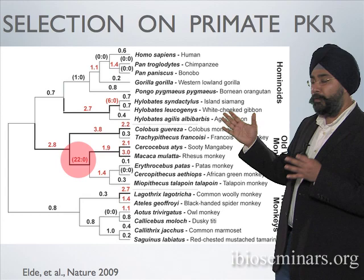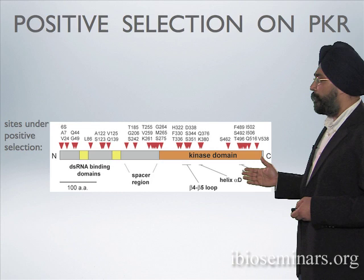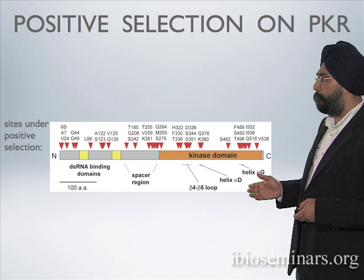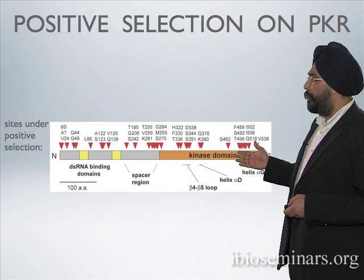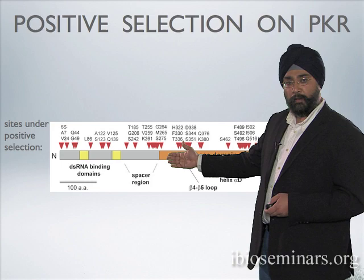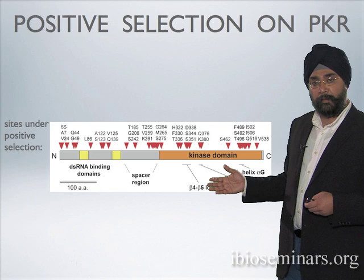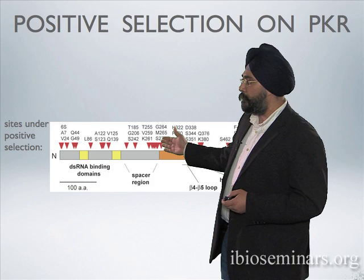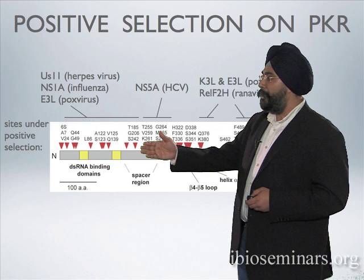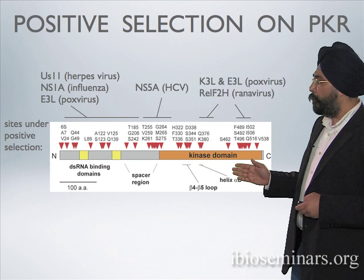When we look codon by codon, we get a landscape of how PKR has been influenced by positive selection. All the tick marks shown above the PKR protein are individual codons that have recurrently evolved under positive selection. These are spread throughout the entire protein motif — in the N-terminal domain, the linker or spacer region, and the kinase domain which carries out EIF2-alpha phosphorylation. We think this dramatic widespread positive selection is because multiple viruses antagonize completely different domains of PKR.